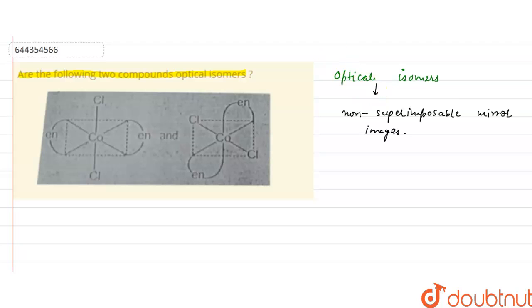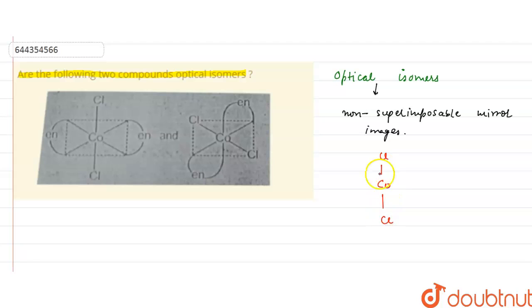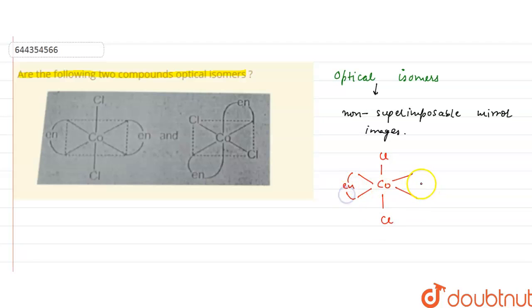Now if we see the compound that is given — in this compound, the chlorines are on the trans position, and the two ethylenediamine (en) groups are also trans to each other.